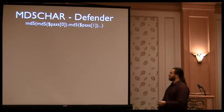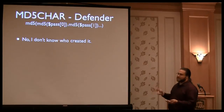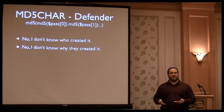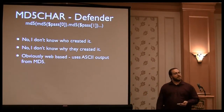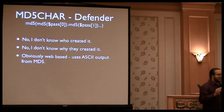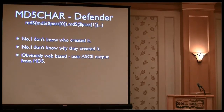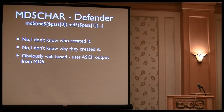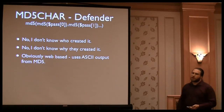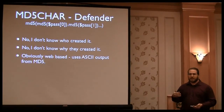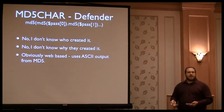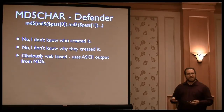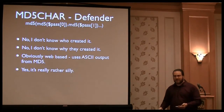Let's take a look at the next one — this bizarre construct. I have no idea who created it, I don't know why they created it, I really don't want to know. However, I'm fairly confident it was created by a web developer — web developers, I love you, please stop inventing password hashing algorithms. The output of the inner MD5s is 32 characters of hex instead of the 16-byte binary output, which is what you get from the default MD5 functions in PHP, Ruby, Python, and whatever the web language of the week is. That's a good indicator that whoever put this together was using it for something web-based.